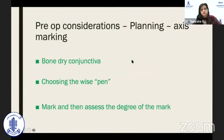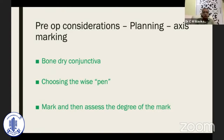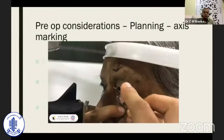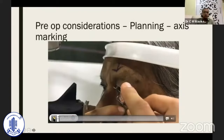On the day of surgery, we have to mark the axis. Axis marking can be done two ways: one is by means of a pen marker, and the second is a digital marker. Let us look at this video.